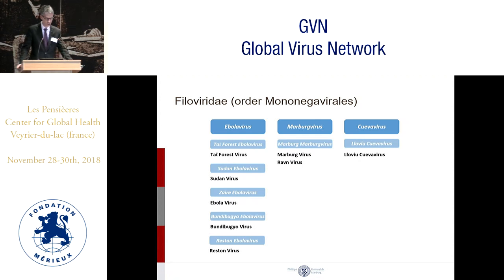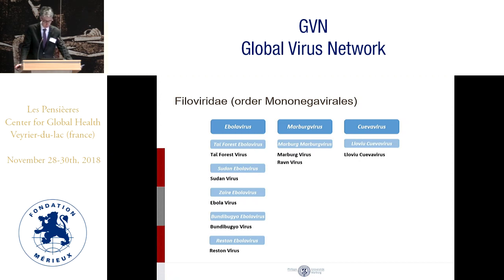There are three genera: Ebola virus, Marburg virus, and a third genus where we don't have the virus yet, but only an RNA sequence of the Cueva virus. While Ebola virus has five species so far, Marburg virus has only one species, which is called Marburg virus, and the Cueva virus is the Lovio Cueva virus.